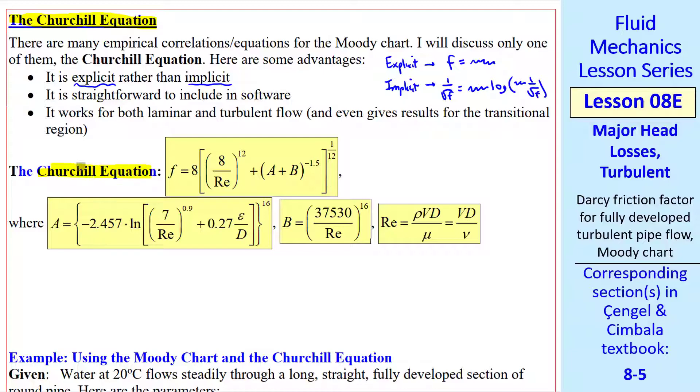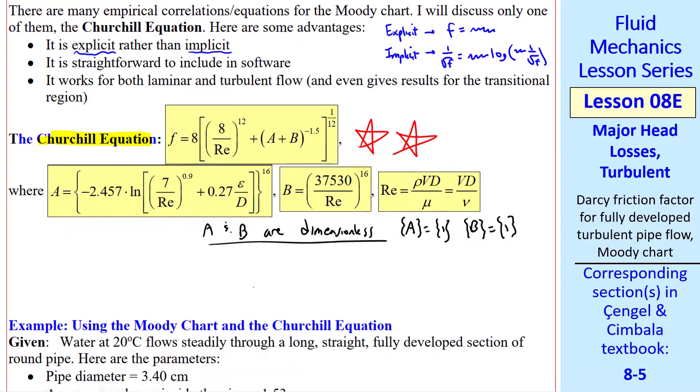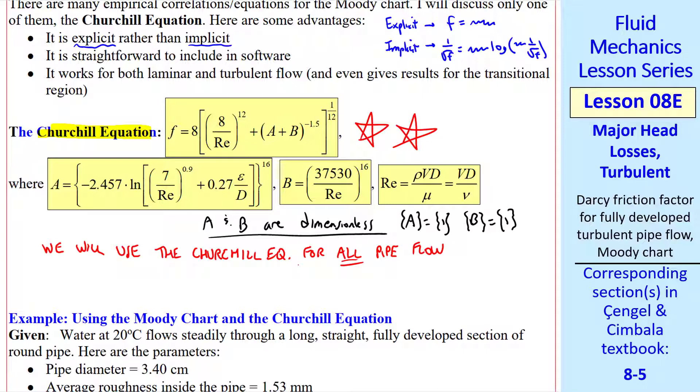So this is the Churchill equation. For a given Reynolds number and epsilon over D, you simply calculate A and B and then F. Note that A and B are dimensionless, in other words, they have dimensions of 1. This is a very important equation in this course. We will use this Churchill equation for all pipe flow problems from now on.